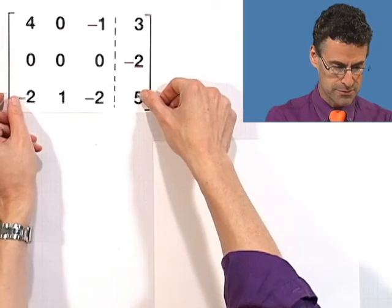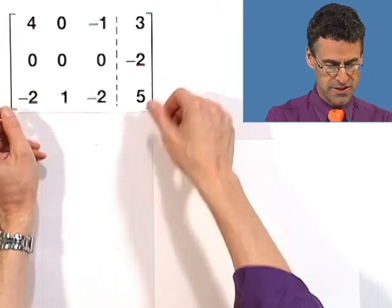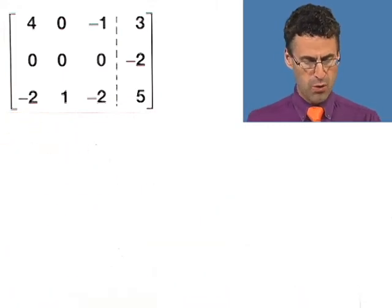Suppose we had a system of three equations and three unknowns. We set up the matrix, started doing elementary row operations, and we're working it away, trying to look at that augmented matrix and work with it. Suppose we get down in the middle of the question to this augmented matrix. Well, what can we conclude?